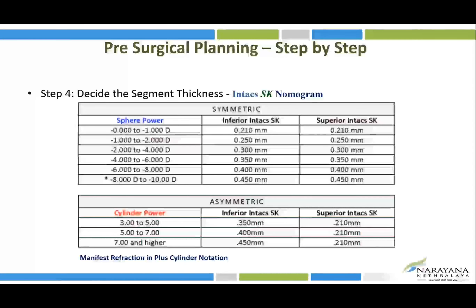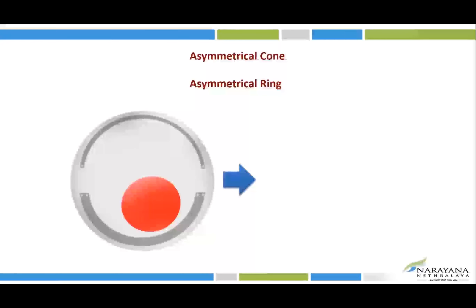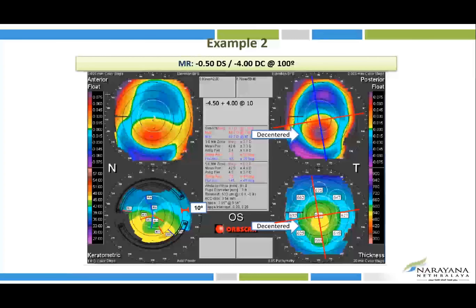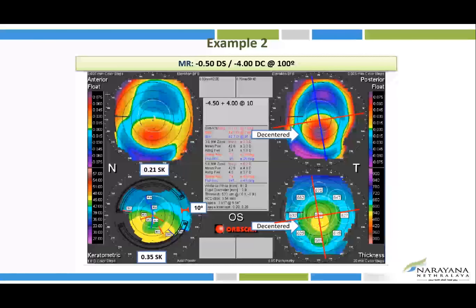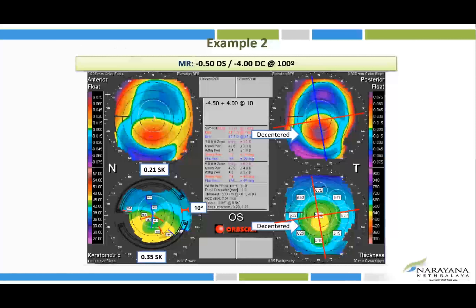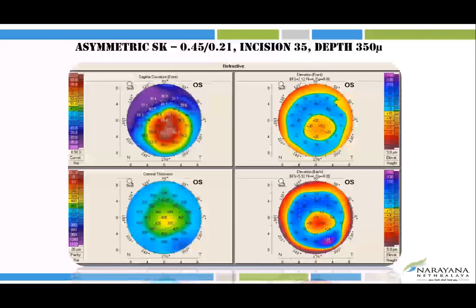Asymmetric rings are planned for asymmetric or decentered cones. For an inferiorly positioned cone, the larger ring is placed on the inferior side to push the cone, and the smaller ring — often size 0.21 — is inserted on the other side to balance. In an example of an asymmetric ring case, a good outcome was achieved postoperatively.